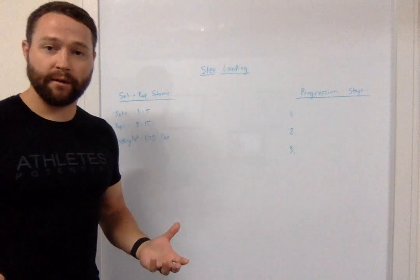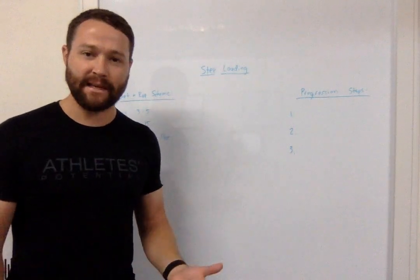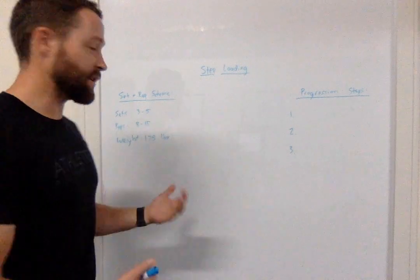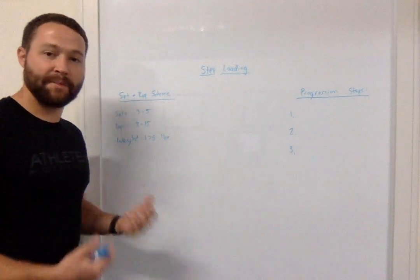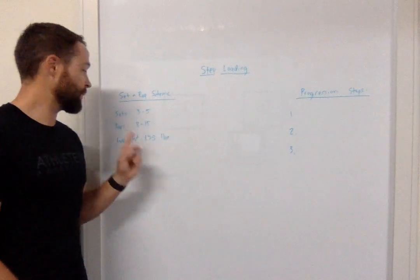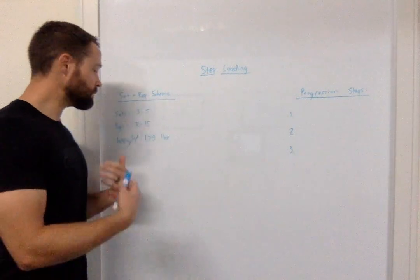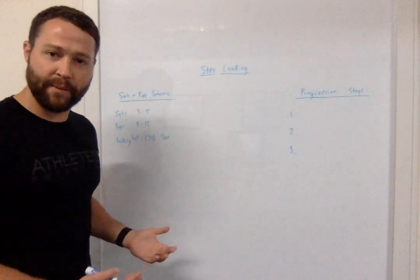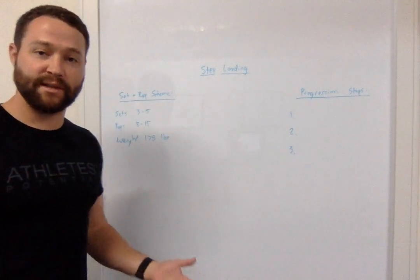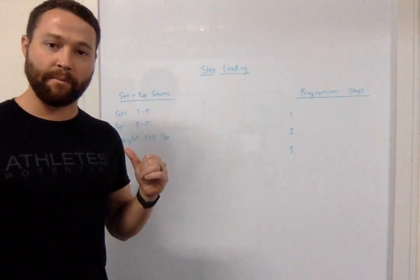We're going to go through it here. Now the first step is we want to pick our rep set scheme and what we're doing. So for this example in particular I've picked a rep set scheme that favors more hypertrophy. So we've got three to five sets here with about eight to 15 reps per set. And then I've got just as an example up here I'm going to use a squat, back squat as an example. The starting weight for that is going to be 175 pounds on my back.